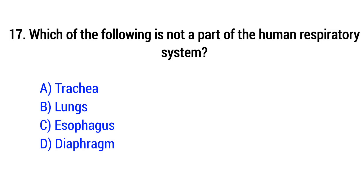Question number 17. Which of the following is not a part of the human respiratory system? Option A, Trachea; B, Lungs; C, Esophagus; D, Diaphragm. The right answer is option C, Esophagus.